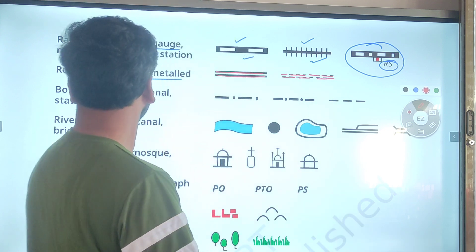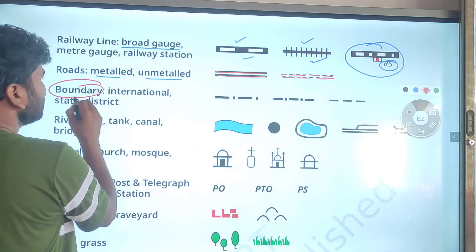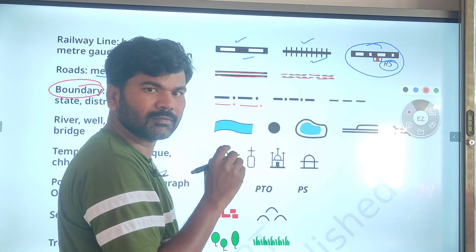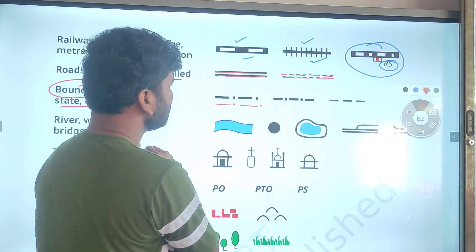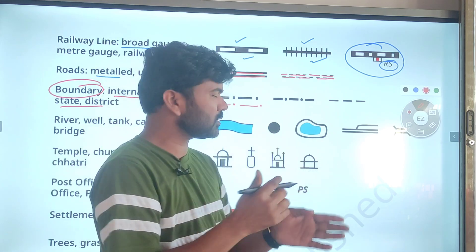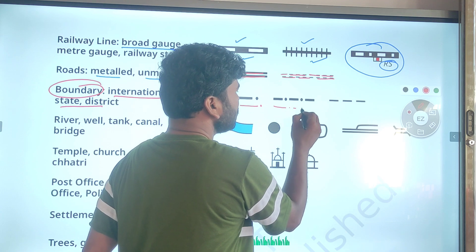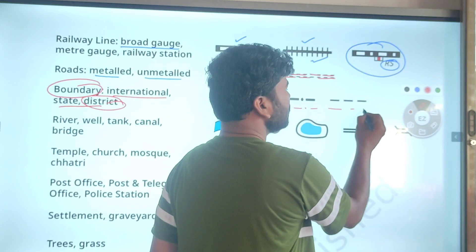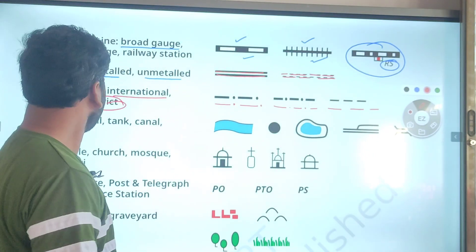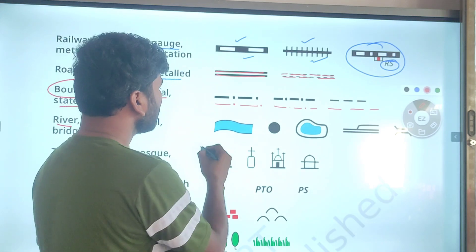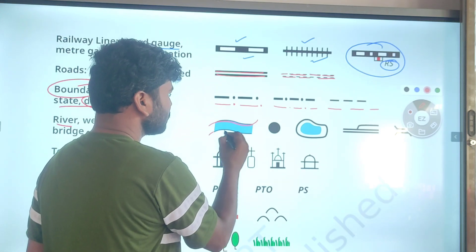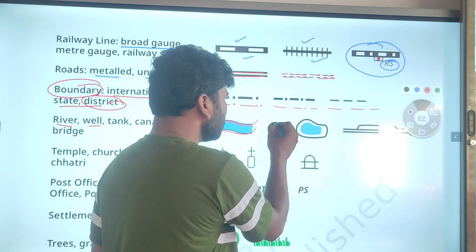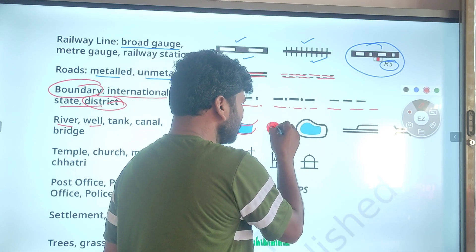Next are boundaries. International boundaries are shown as a line-dot-line-dot pattern. The state border symbol is a dot-line-dot-line pattern. The district symbol is a dot-line pattern repeated. For rivers, the symbol is curved lines. A well is shown as a completely dotted circle.